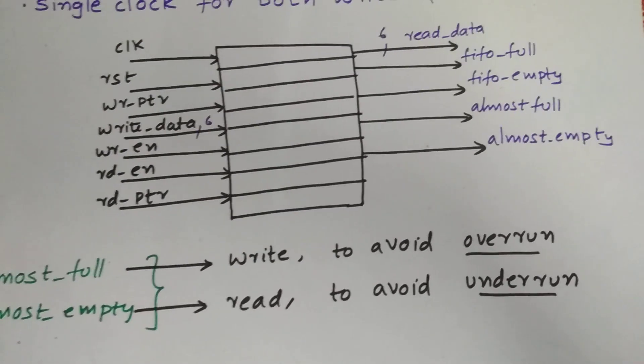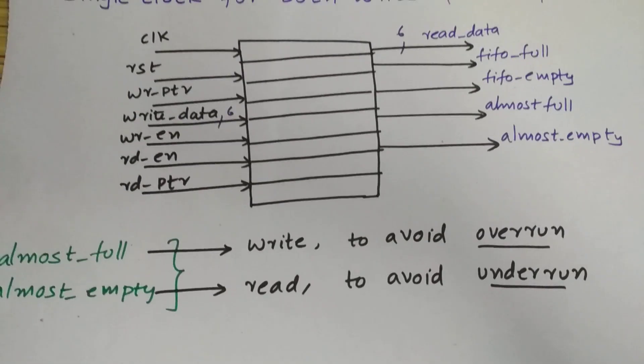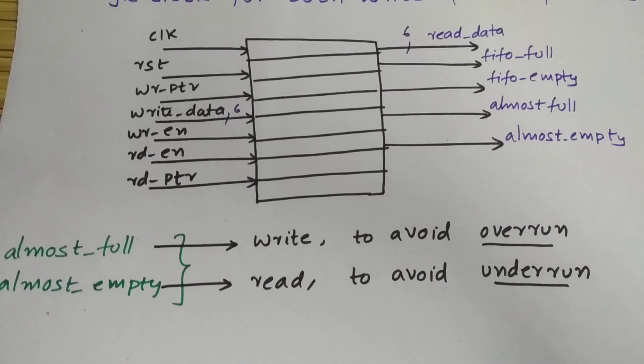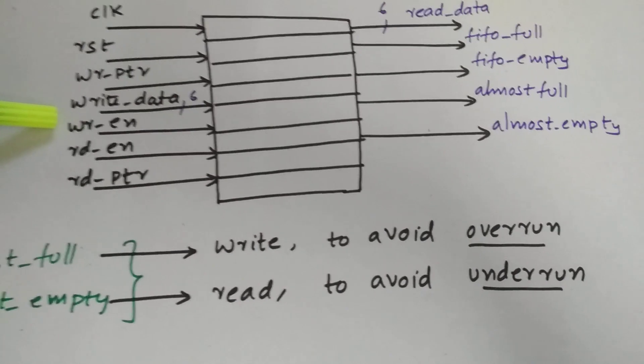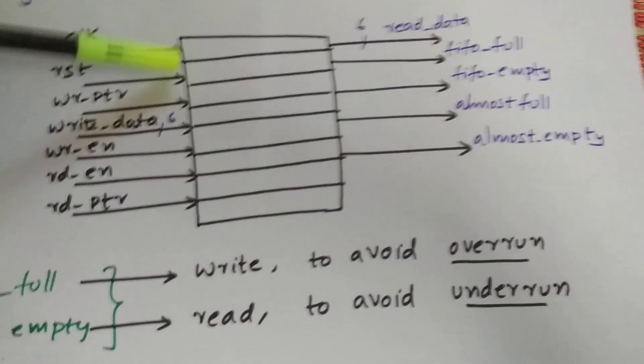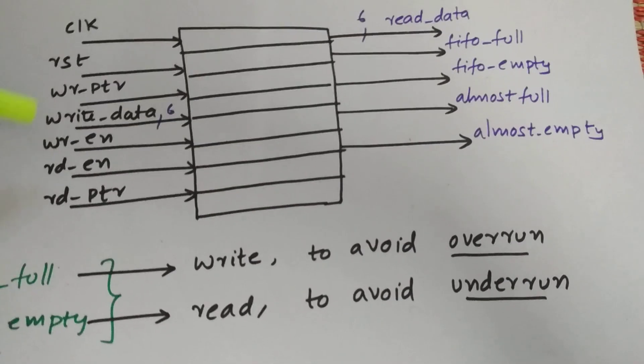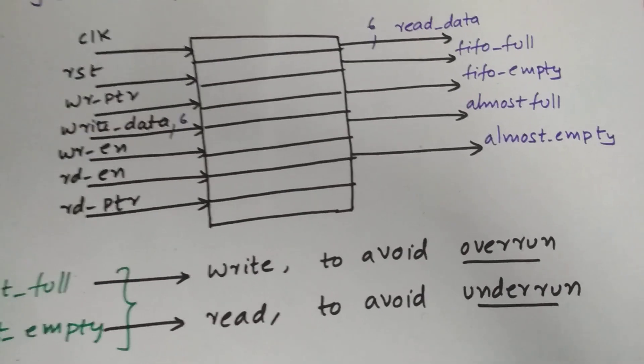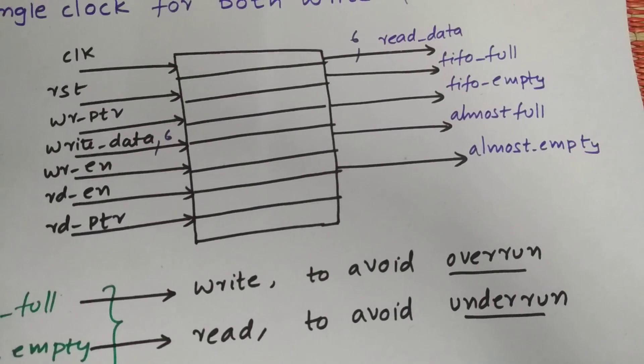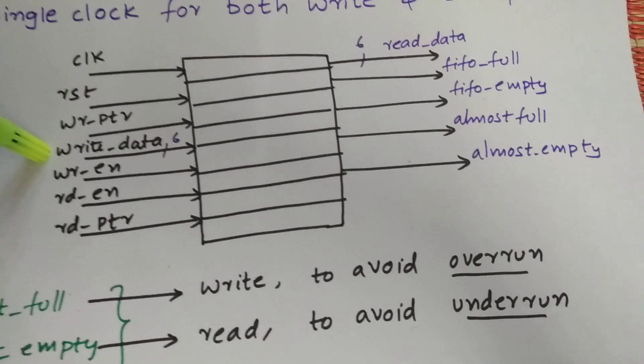We need to avoid this, so we are going to use almost full and almost empty. When we have the write enable signal high and it's almost full, then we can de-assert or make it low so that we can avoid the data transmission or data loss while this write enable goes low and still the data is flowing.